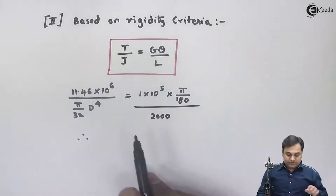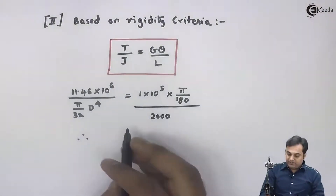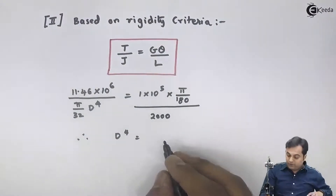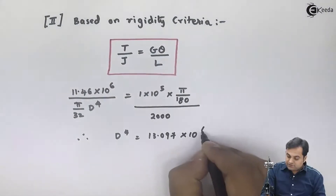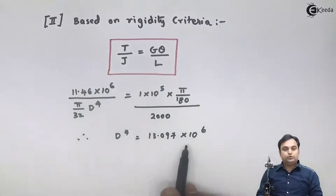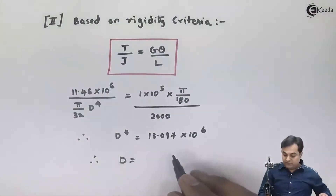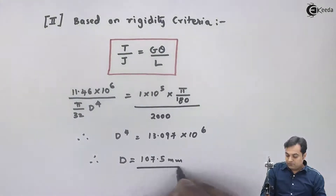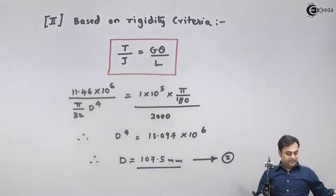Calculating all the terms, the value of D raised to 4 comes out to be 13.097 into 10 raised to 6. Taking the square root twice gives D equal to 107.5 mm. I will call this equation number two, obtained from the rigidity criteria.